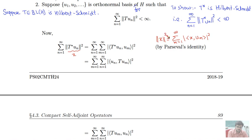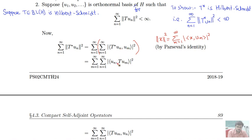Taking x equal to T*(uₙ), Parseval's identity gives us: norm of T*(uₙ) squared equals summation m equals 1 to infinity of the mod of the inner product of T*(uₙ) with uₘ, squared. So the full sum becomes summation n equals 1 to infinity, summation m equals 1 to infinity, of mod of the inner product T*(uₙ) with uₘ, squared. Now, this inner product T*(uₙ) with uₘ is, by the property of the adjoint, equal to the inner product of uₙ with T(uₘ).